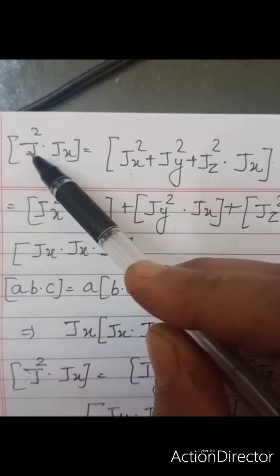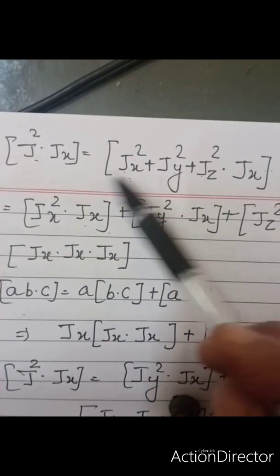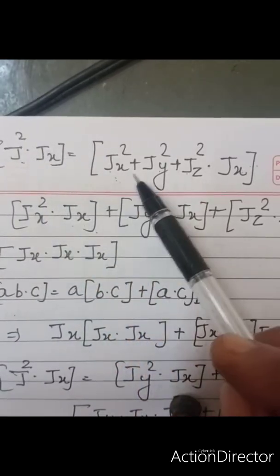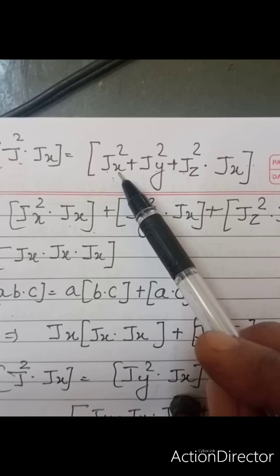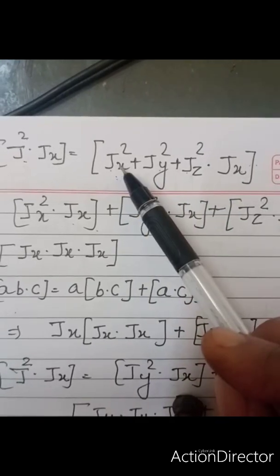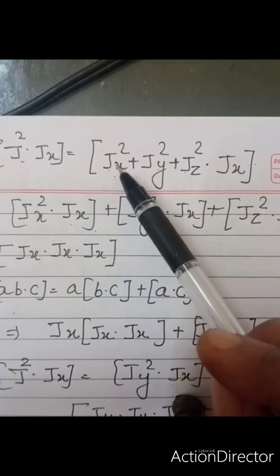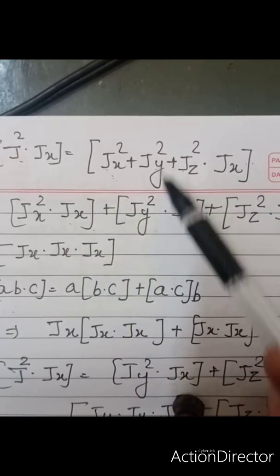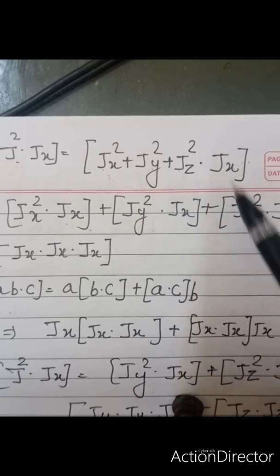Taking the relation J square JX, we will be solving this. J square will be putting the value: JX square, JY square, JZ square times JX. We can rearrange this as JX square JX, JY square JX and JZ square JX.